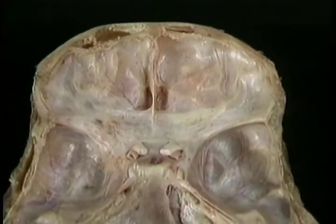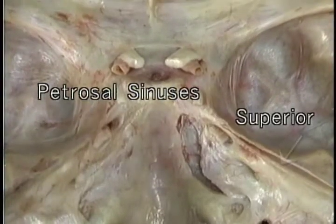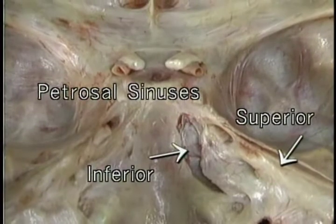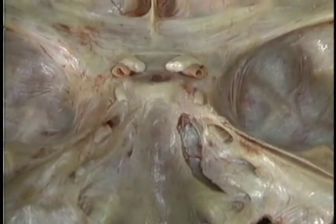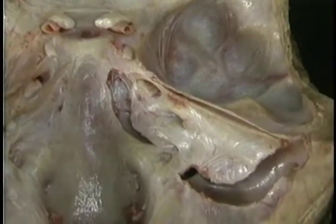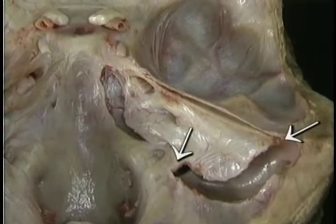The cavernous sinus drains into the two petrosal sinuses — superior and inferior — which have been exposed on the right side. The petrosal sinuses also receive veins from the cerebellum. They empty into the sigmoid sinus. Now we've finished looking at the intracranial blood vessels.